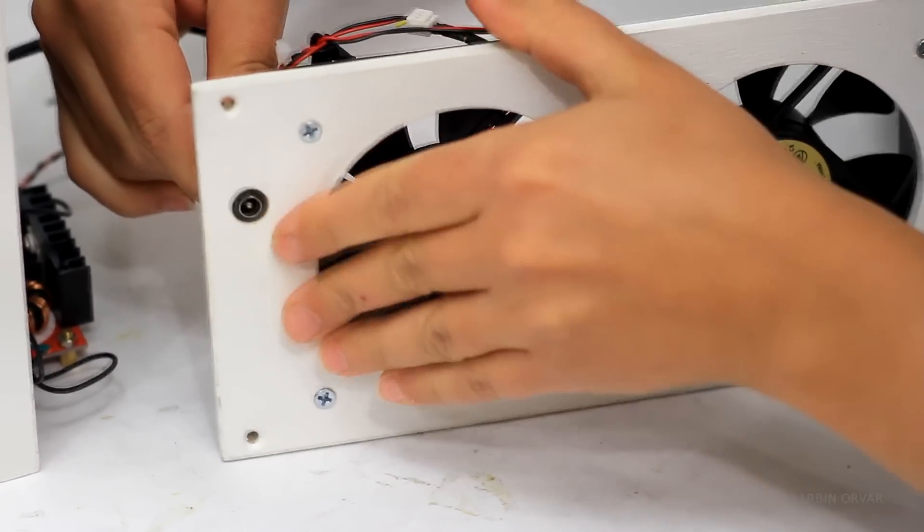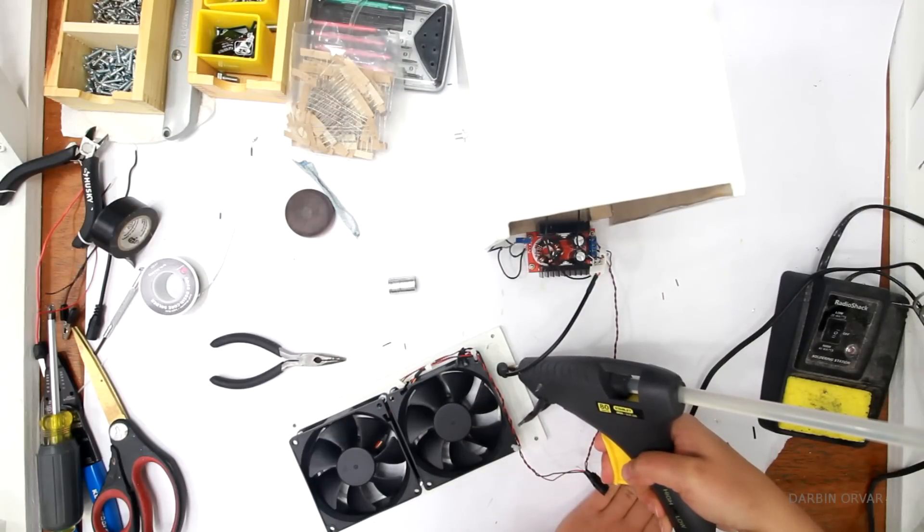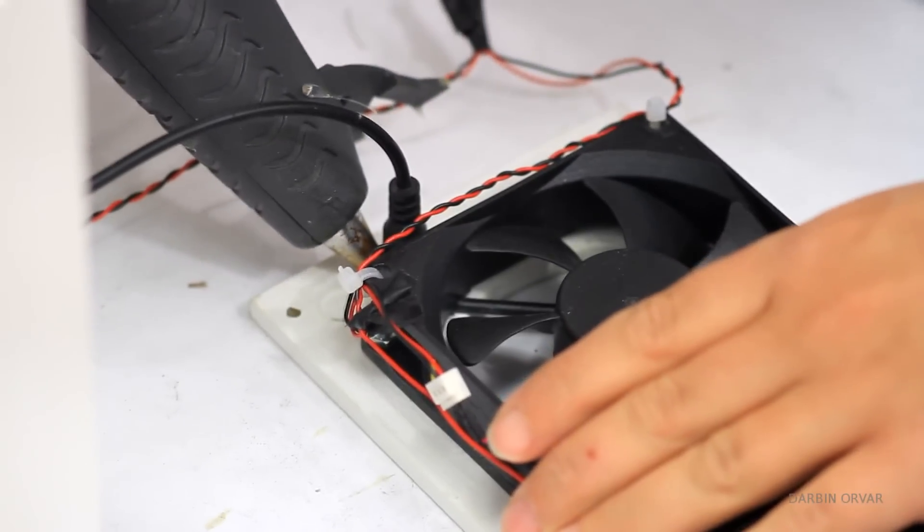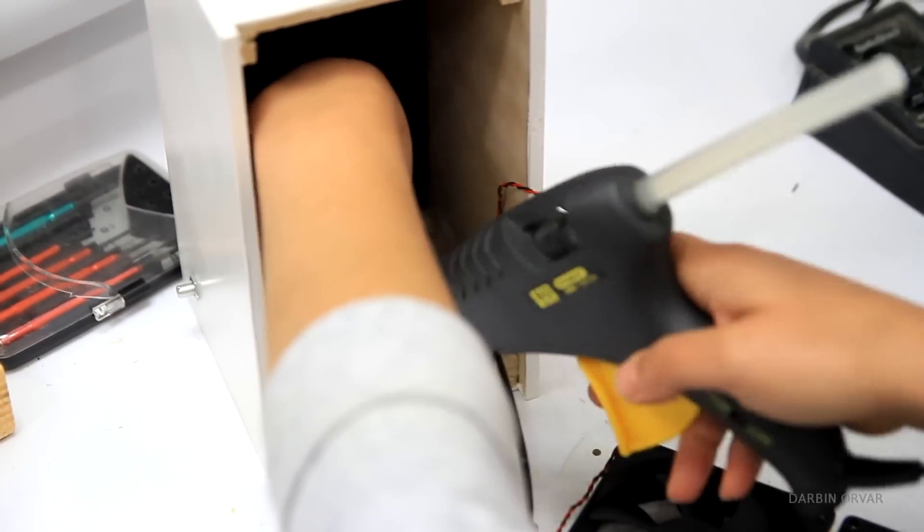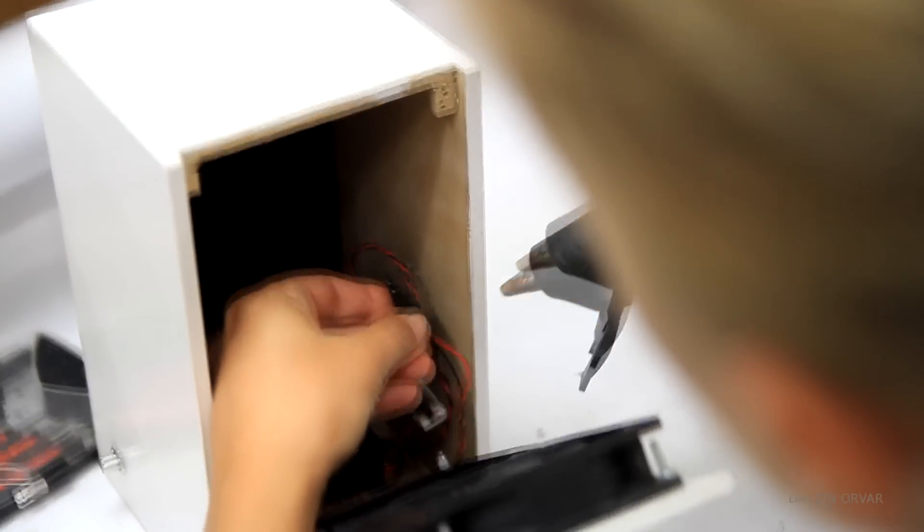The power cord goes in the back, right below the fans. It's a pretty tight fit. Then I'm hot gluing around it to secure it in place. Also securing the booster with some hot glue, as well as some wires to the side of the box, because I don't want them to interfere with the fans.